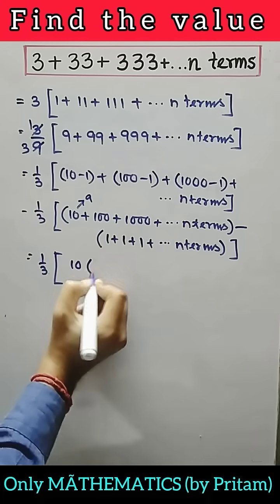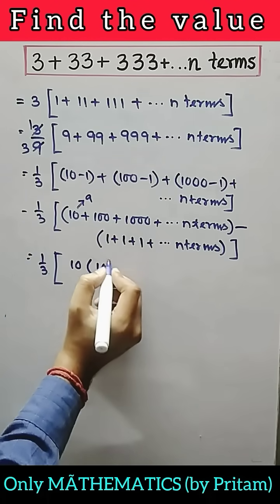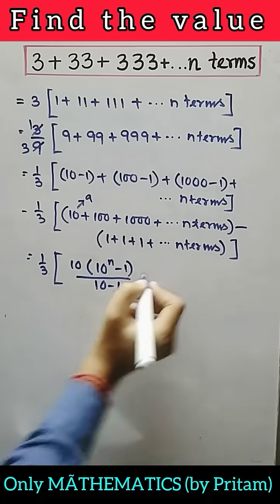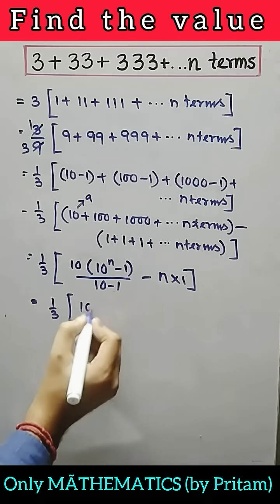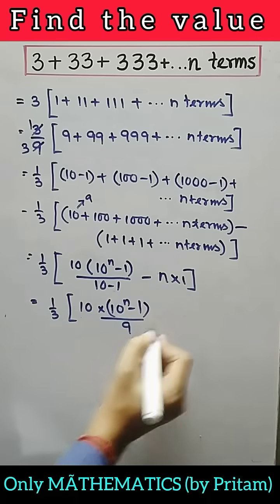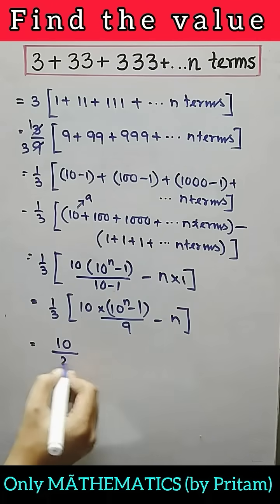So the summation formula is a into r to the power n minus 1 by r minus 1, and number of a is n. So n into 1, so now simplify this and multiply it with 1 by 3, will get the answer.